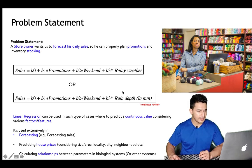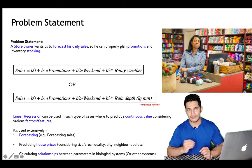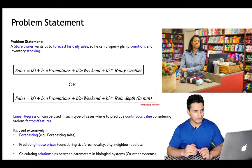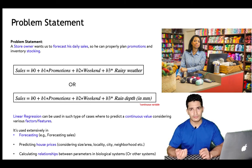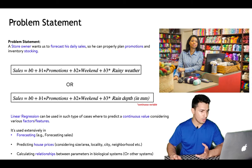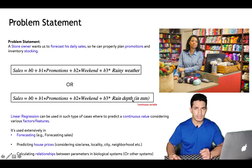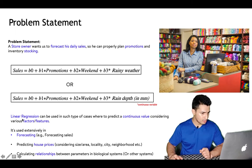Rain can either be measured as rain or not (a boolean zero or one), or it can be measured in terms of depth — how heavy or light the rainfall was. If it's not very heavy, more people go out; if it's very heavy, fewer people shop. So linear regression can handle both boolean and continuous variable types.